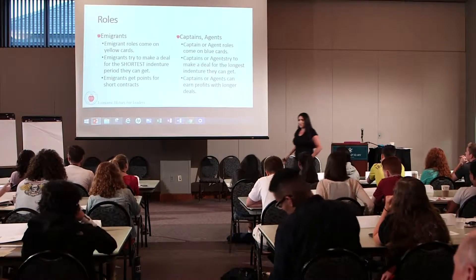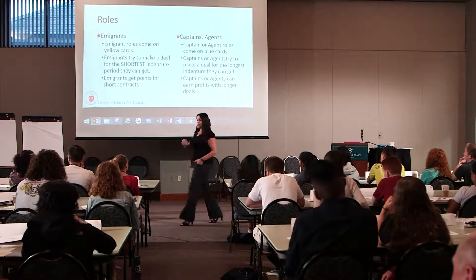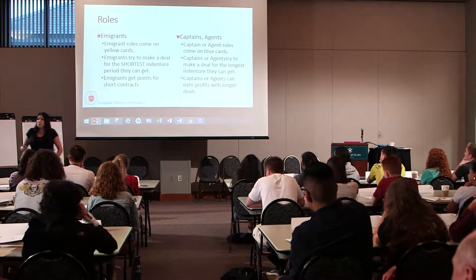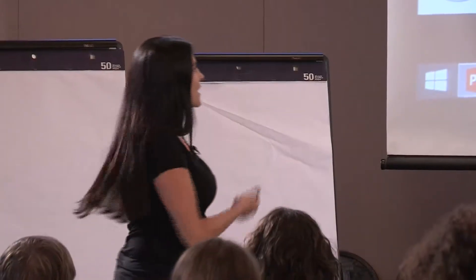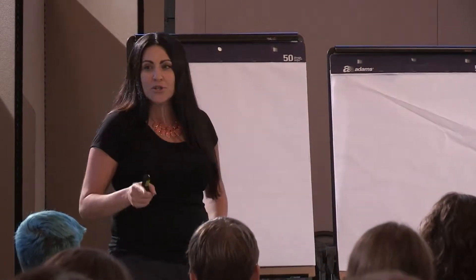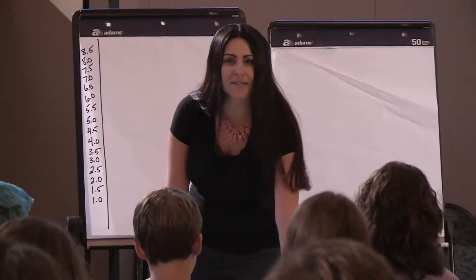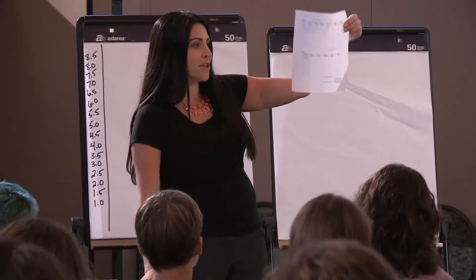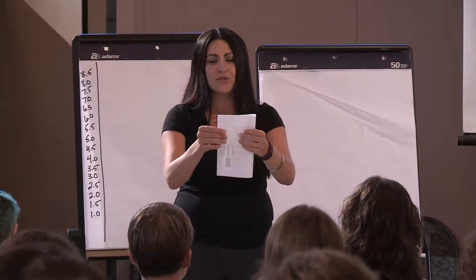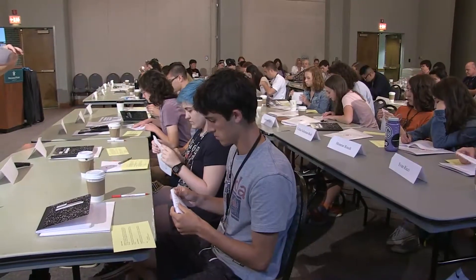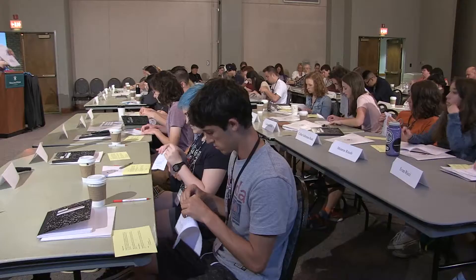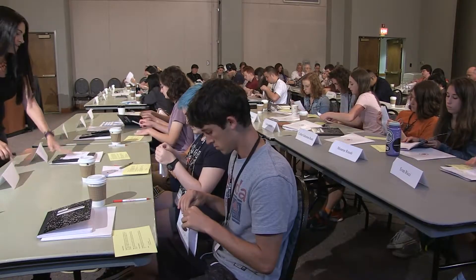Emigrants, you want passage to the new world and you want to make that contract for the shortest amount of time possible, because that's what you're paying with. So you want to try to get the shortest indenture possible. You're going to get points for short contracts. Everybody has a score sheet that's white — go ahead and look at your score sheet and fold it in half, because there are actually two score sheets on it. The bottom one is for the emigrants with yellow cards, so flip yours to the bottom half. That's the side you're going to focus on for this part of the activity.